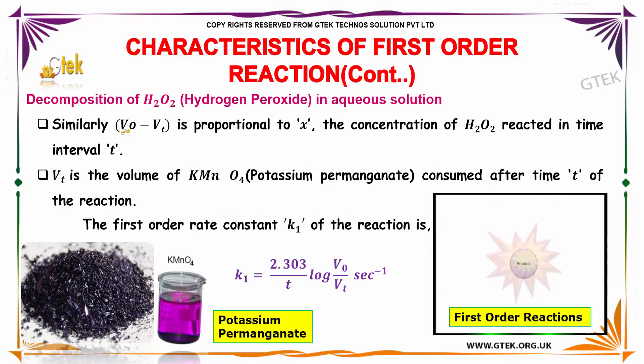We've got (V0 minus Vt) is proportional to x, the concentration of hydrogen peroxide reacted in time interval t. Vt is the volume of potassium permanganate consumed after time t.